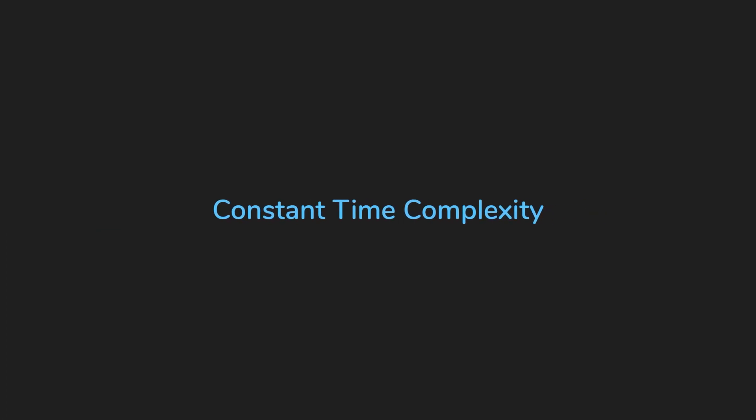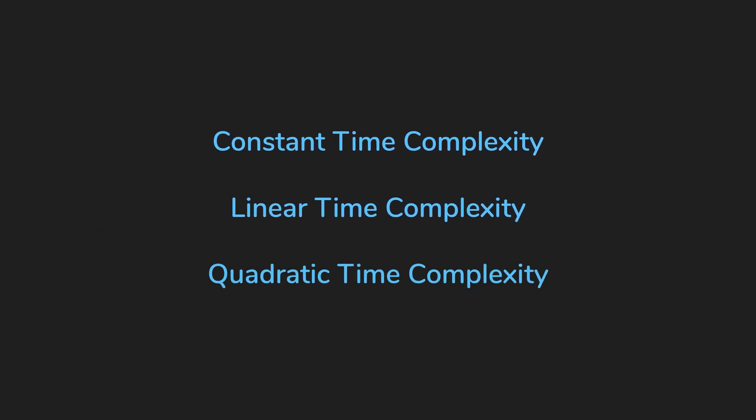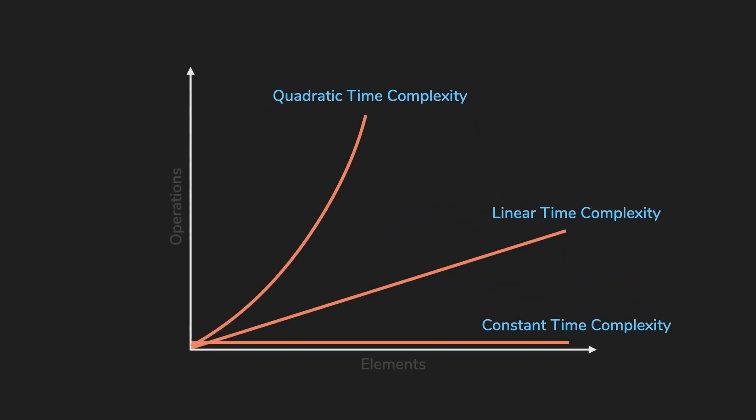Now that we have a better understanding of what time complexity is, let's look a bit more into what asymptotic analysis means. So far, we've looked into three different types of time complexities: constant, linear and quadratic. When we plot them together, it would look like this.